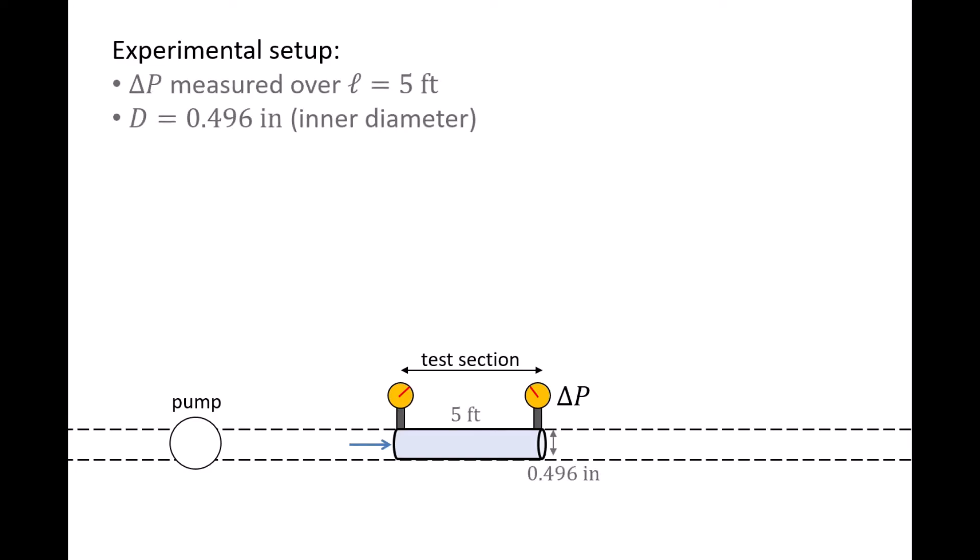Let's say the length of pipe is 5 feet and the inner diameter of the pipe is 0.496 inches. Water at 60 degrees Fahrenheit flows through the system, and at that temperature the density is 1.94 slugs per cubic foot, and the absolute viscosity is 2.34 times 10 to the minus 5 pounds-force seconds per foot squared.